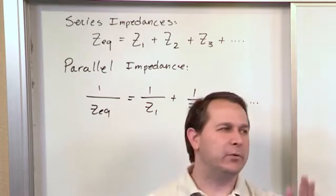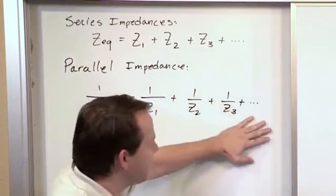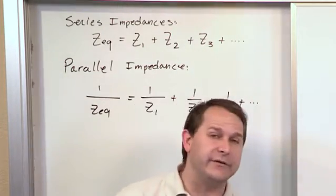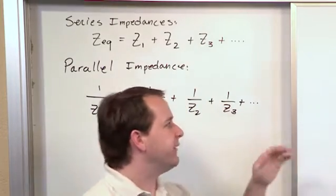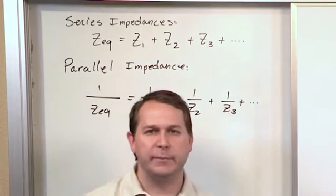That thing is equal to one over the equivalent resistance. So if you have three or four or five or six items in parallel, they could be resistors, they could be capacitors, they could be inductors, or any combination, then you just apply this straight out. It's just that every item you have is going to be an impedance.